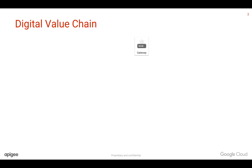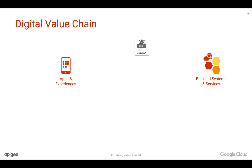If you think about the API gateway, you normally think first about the backend system. This can be like a legacy system, a monolithic system, or even a micro system. Those systems can be hosted either as a private cloud or public cloud. Then on the other hand side you have the applications.